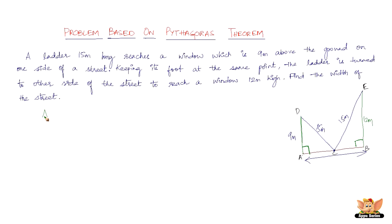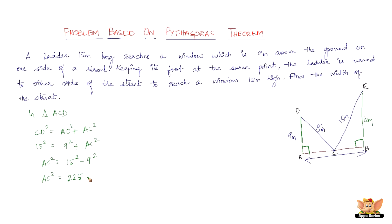In triangle ACD, the hypotenuse is CD, opposite the right angle. By Pythagoras theorem: CD² = AD² + AC². So 15² = 9² + AC², which gives AC² = 225 − 81 = 144. Therefore AC = √144 = 12 meters.